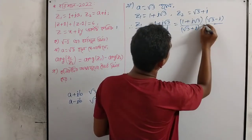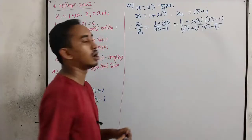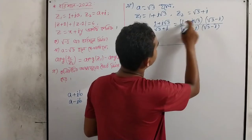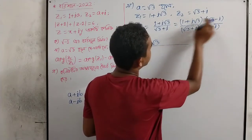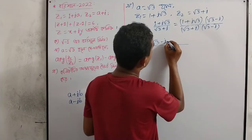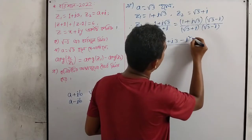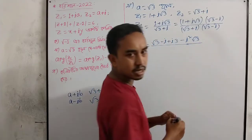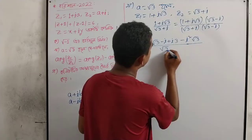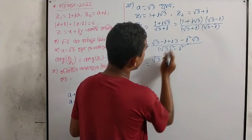The value of root 3 minus i. So the value of root 3 minus i is the value of root 3 minus i. Let's simplify the value of root 3 minus i.